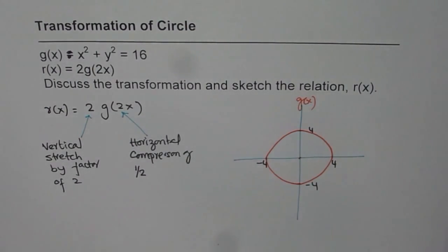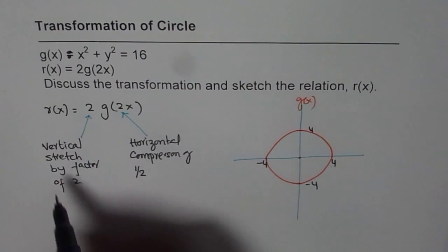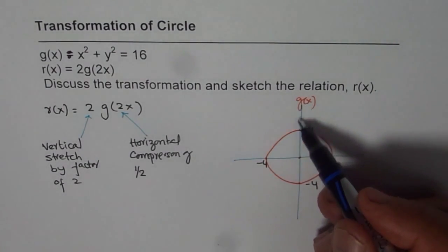So that is horizontal compression by a factor of half. Now knowing this we can actually sketch r of x. So the relation r of x, it is a relation since it fails vertical line test.